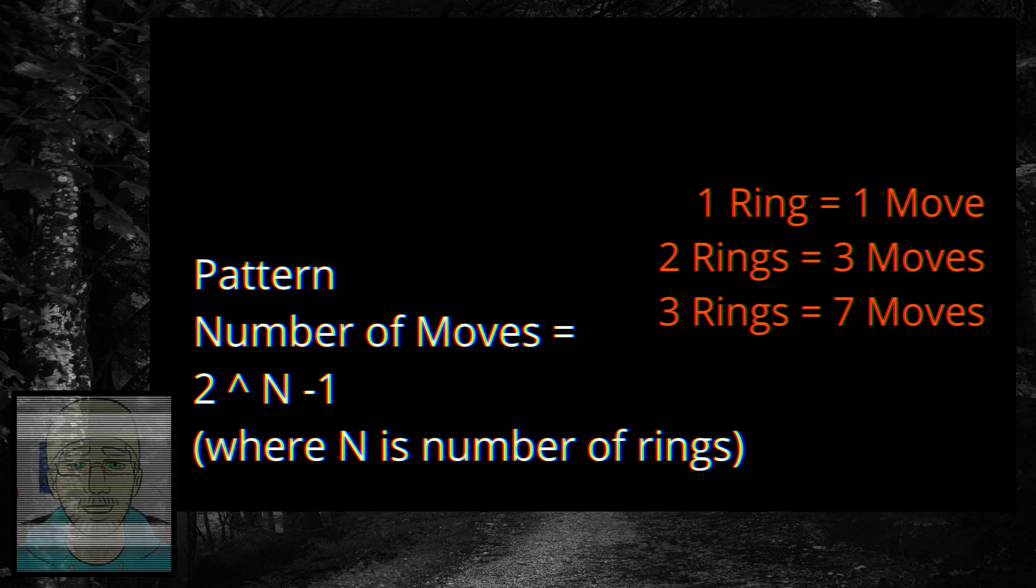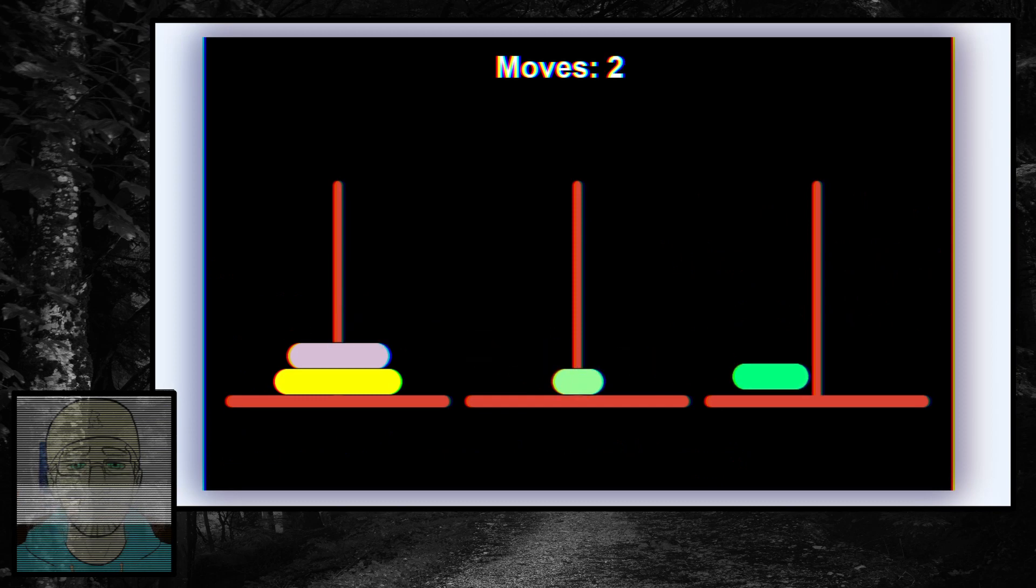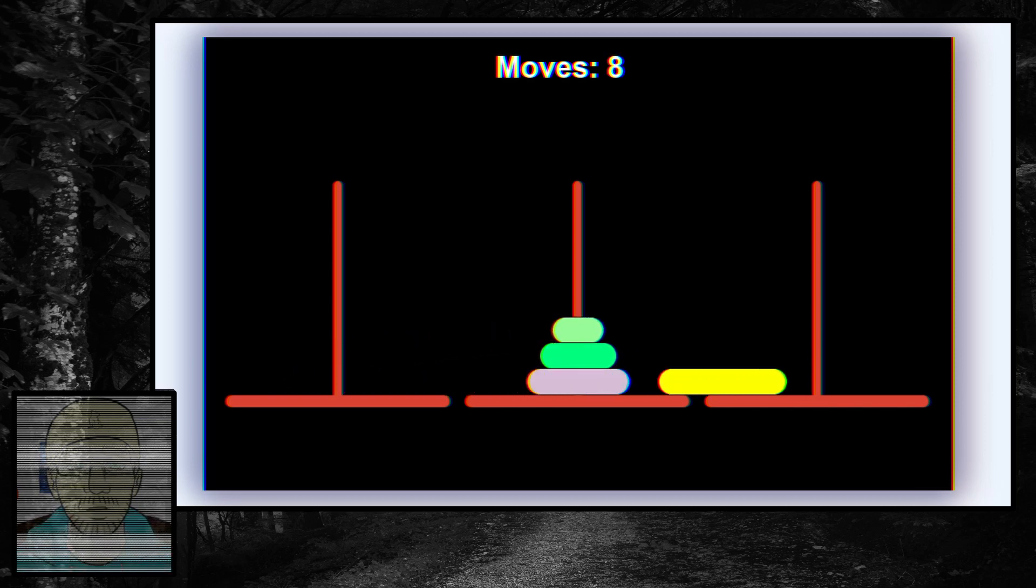With that pattern in mind, let's predict what would be the optimized number of moves if there were 4 rings. Our formula predicts that the number to be 2 to the power of 4 minus 1, or 16 minus 1 equals 15.